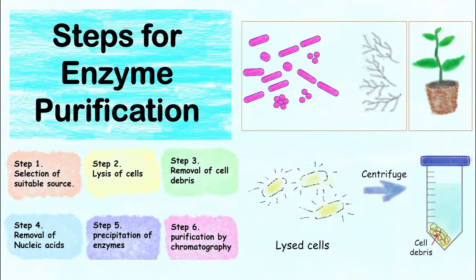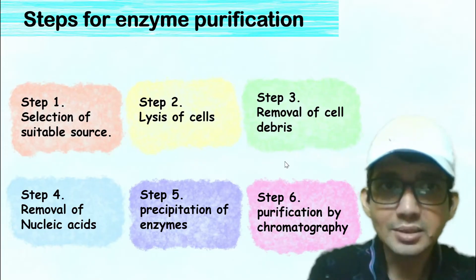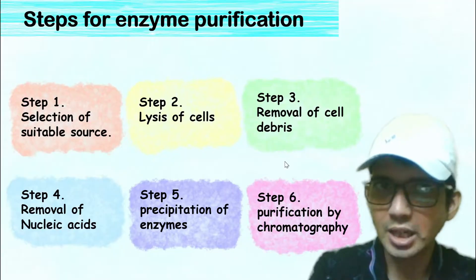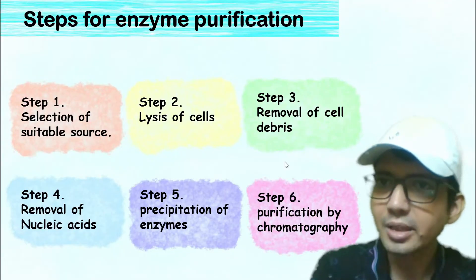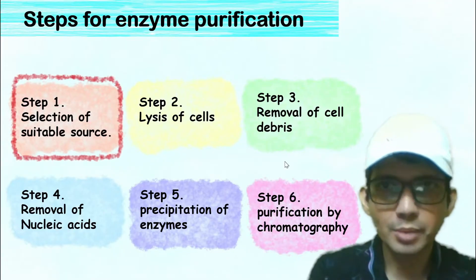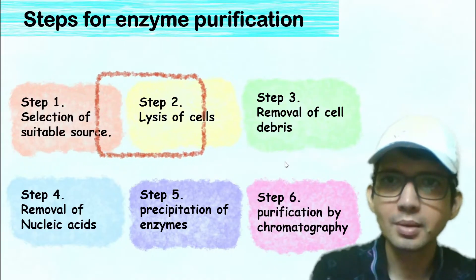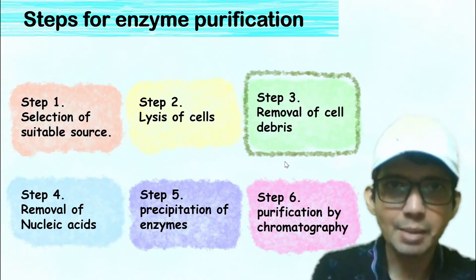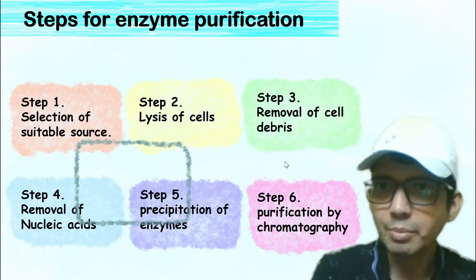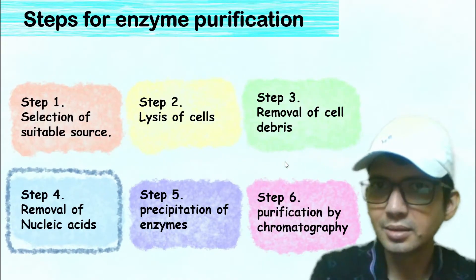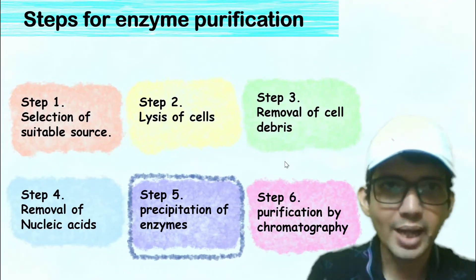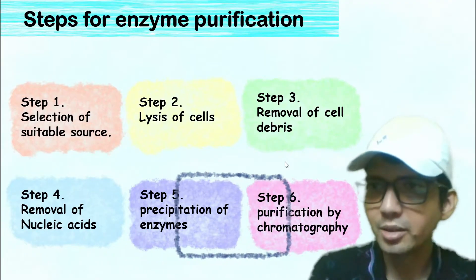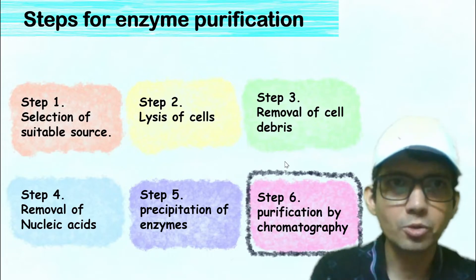Hello everyone, let's talk about steps for enzyme purification. There are several steps involved in purification of enzyme. These involve: selection of suitable source, lysis of cells, removal of cell debris, removal of nucleic acid, precipitation of enzyme, and purification by chromatography.